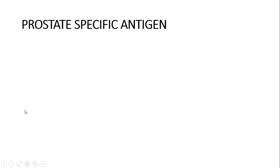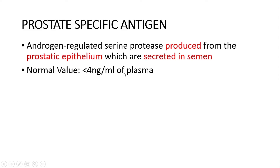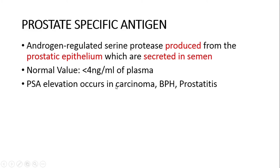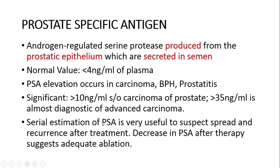Prostate-specific antigen: there has been much discussion about PSA — whether to use it as part of investigation in BPH and its sensitivity and specificity. PSA is an androgen-regulated serine protease produced from prostatic epithelium and secreted in semen. The normal value is less than 4 nanogram per ml of plasma. PSA elevation occurs in carcinoma, BPH, or prostatitis. If PSA is greater than 10 ng/ml, that is significant and suggestive of carcinoma prostate; if greater than 35 ng/ml, it is almost diagnostic of advanced carcinoma. Serial estimation of PSA is useful to suspect spread and recurrence after treatment, and a decrease in PSA after therapy suggests adequate ablation.